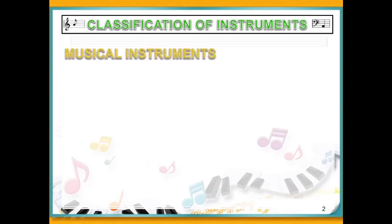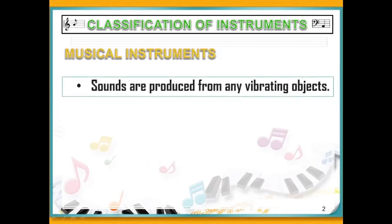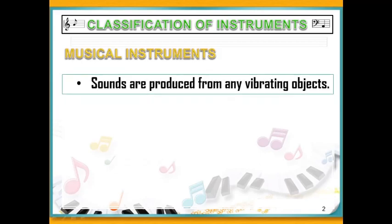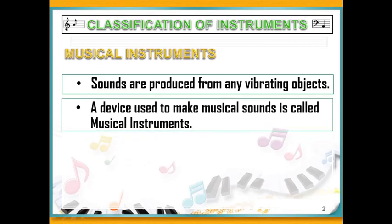Musical instruments — you might be asking, how does sound produced from a musical instrument? It is through vibrations. How do we know if a certain device is a musical instrument? When a device is used to make musical sounds, it is called a musical instrument.